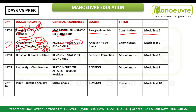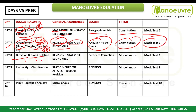Day 7 continued: Revision of static GK. Revise all the current affairs you have completed — all 6 months. Antonyms, synonyms, spell check, consideration, mock 7. Day 8: Direction, blood relation — expect 2 to 3 questions. Revision, static GK economics and miscellaneous topics — go through them. Sentence correction, miscellaneous, mock 8.